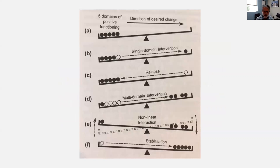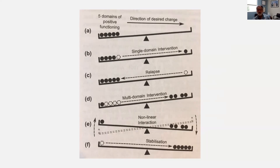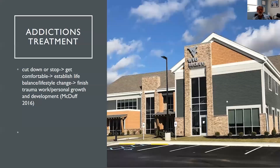A diagram illustrates this: if you have just one change across all the modules, you're likely to have relapse because it hasn't stabilized. But when there are multiple changes across multiple domains, it tips into a new stable state — you get stabilization and a new way of life. That's what we're striving for: creating stabilization by affecting multiple modules at once.